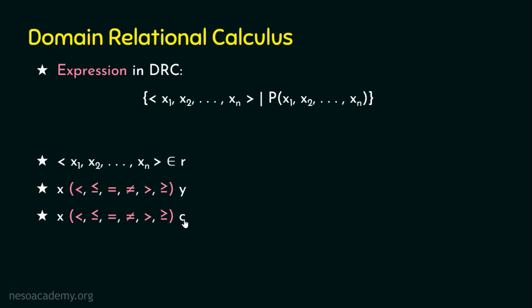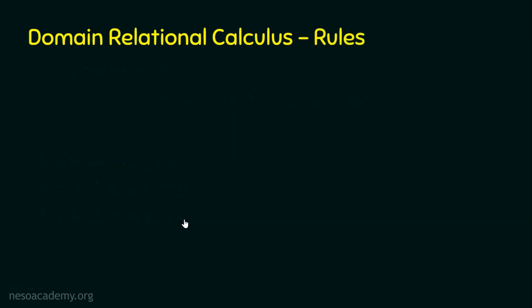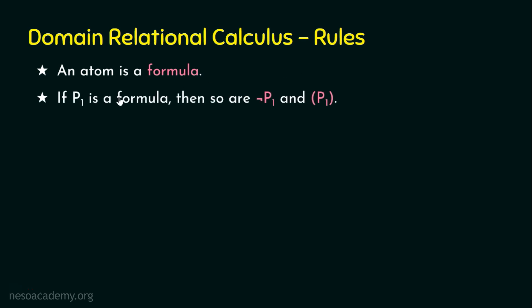In tuple relational calculus we saw some rules; likewise, here we also have rules for domain relational calculus. The first rule is that an atom is a formula — for example, s belongs to r, where s is a domain variable. The second rule is: if p1 is a formula, then so are negation of p1 and p1. The only difference from tuple relational calculus is that here we work on domain variables at the attribute level, not at the tuple level.